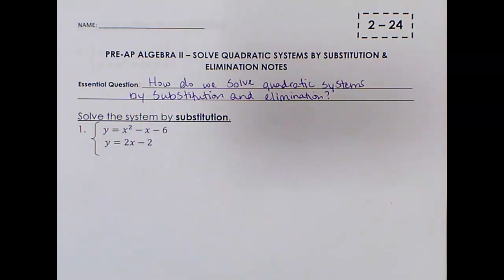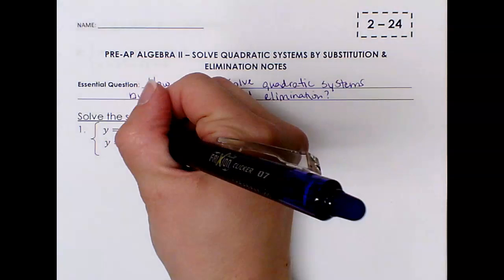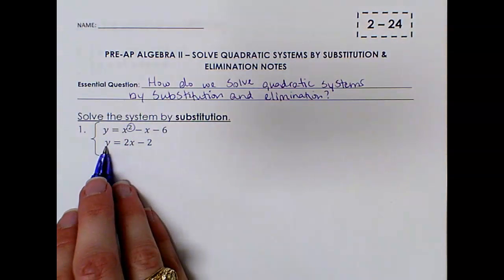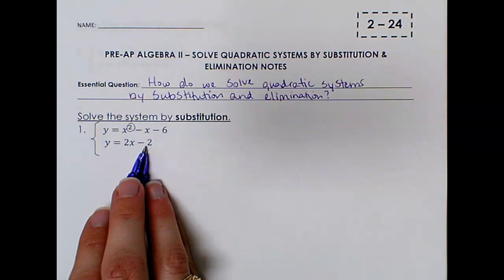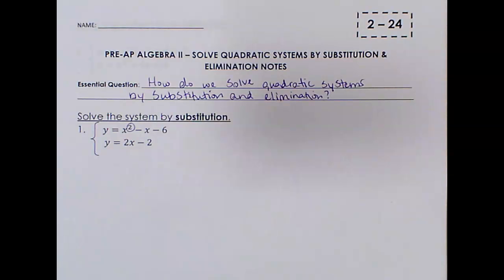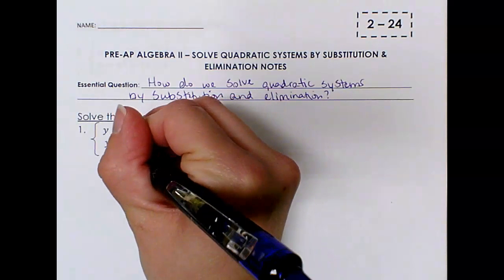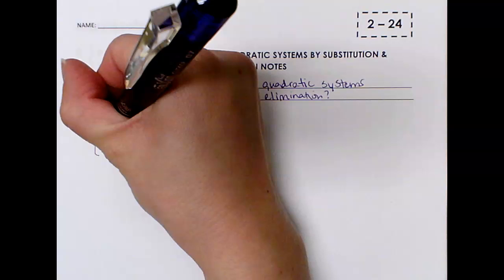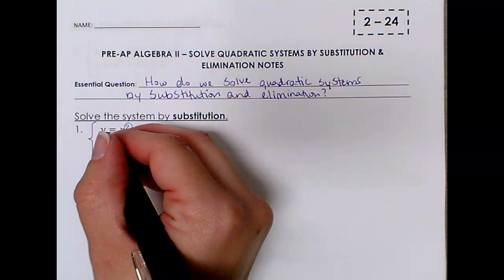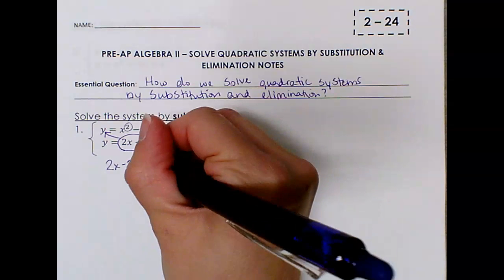In the first example, we have y equals x squared minus x minus 6. That's a quadratic because of that squared. And then we also have y equals 2x minus 2. That's a linear equation because there is no squared. If you remember when you solve with substitution, you want to make sure that you have at least one variable solved for, and here we have both equations solved for y. So I'm going to take what y equals, and since y equals 2x minus 2, I'm going to substitute 2x minus 2 for y.